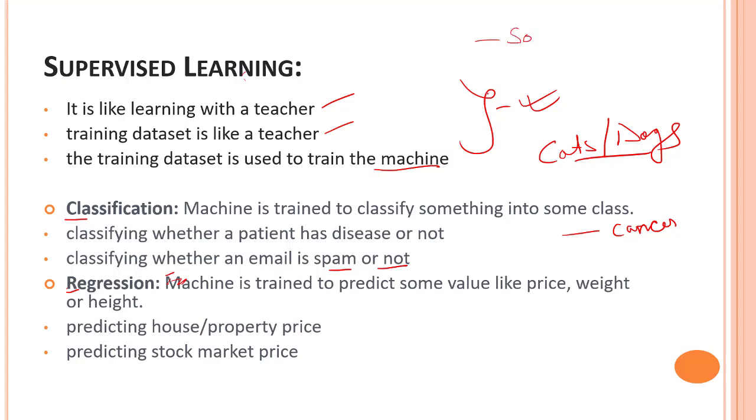So a machine learning algorithm, that is a classification type supervised learning algorithm, will tell you whether it is spam or not.